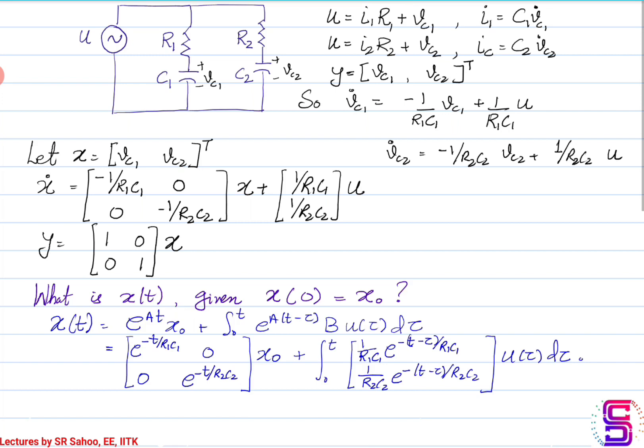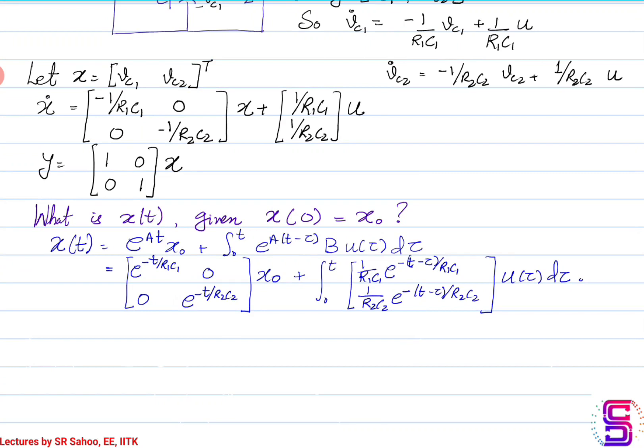Now we want to check the reachability and controllability. One way is to find the reachable set and the controllability set and then comment on those sets. To do this, we solve the differential equation to find X(t). Using the solution expression for X(t), substituting matrices A and B, we get the expression for X(t).